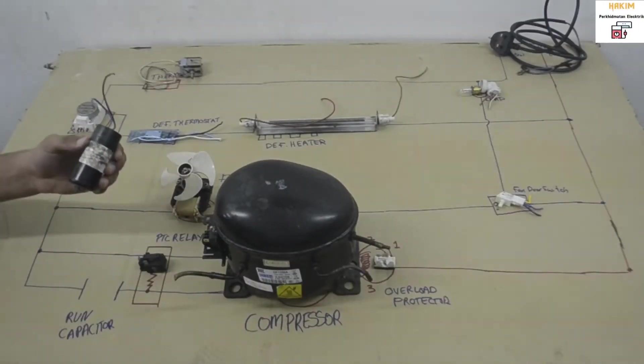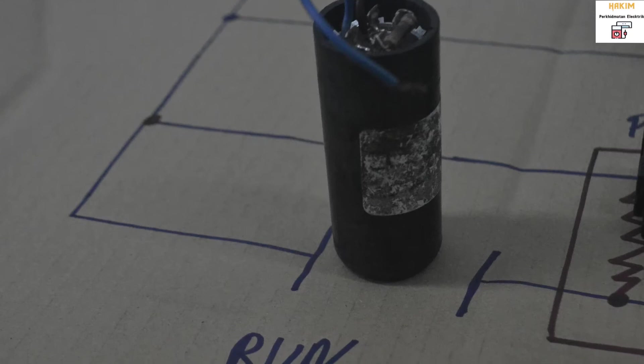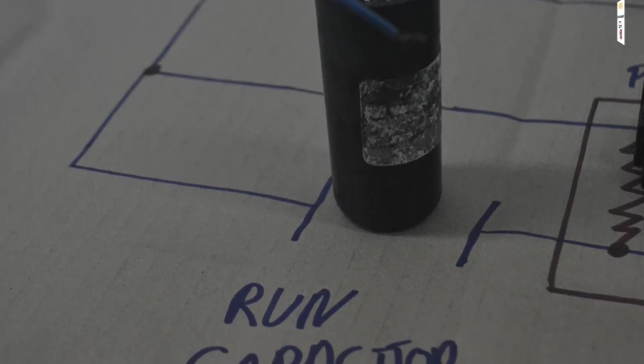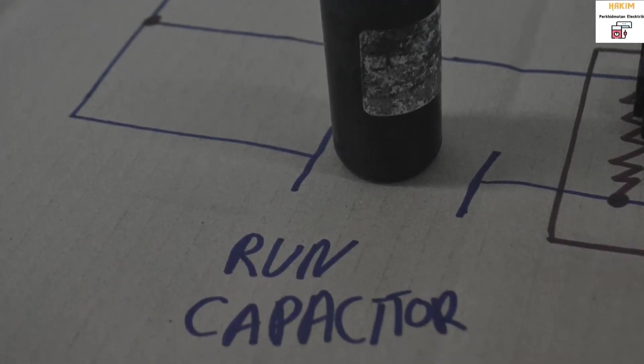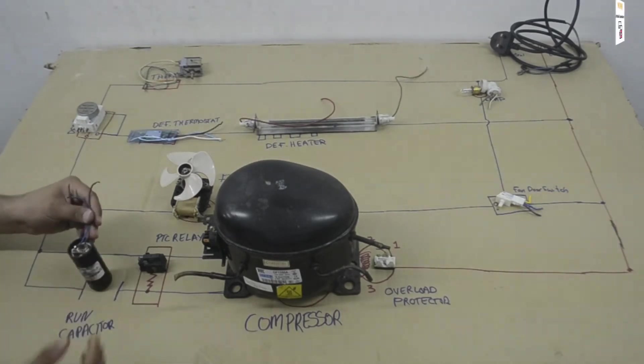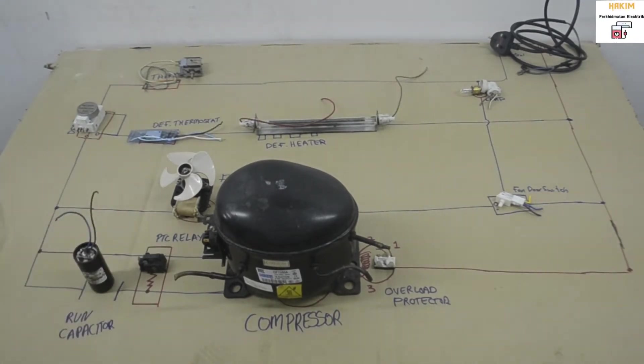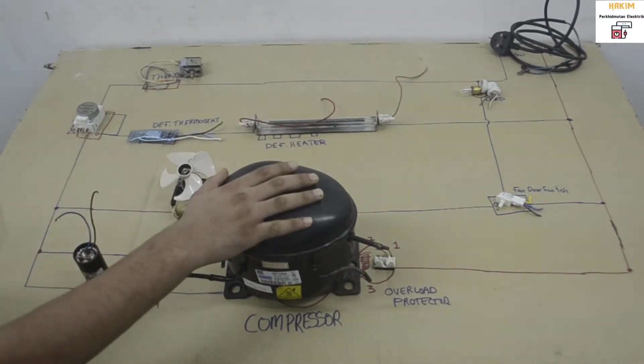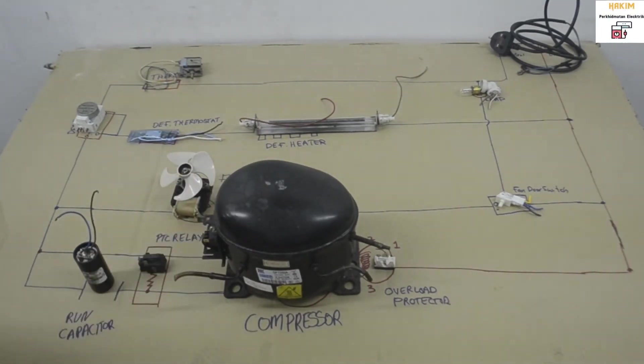Then from this we get to the capacitor. You can call it run capacitor or just a capacitor. What this thing does is it tells the compressor in which power it should be running, in case if it doesn't take a lot of power.